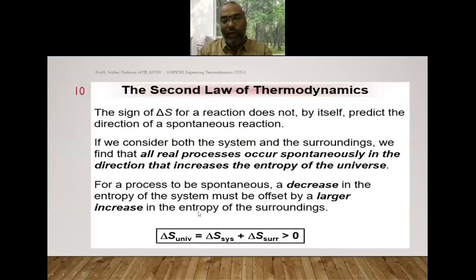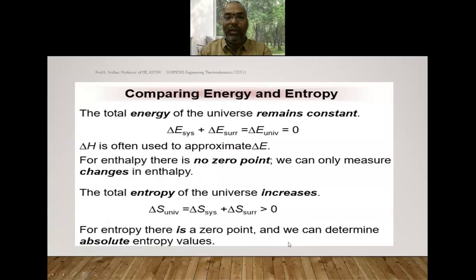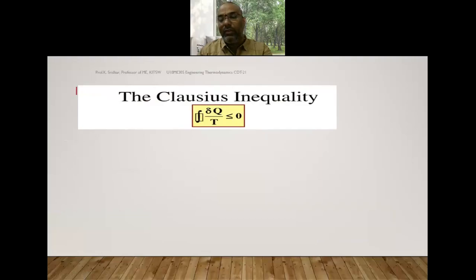To find the entropy change of the universe: the universe is the summation of system and surroundings, so ΔS_universe = ΔS_system + ΔS_surroundings. For an irreversible process this is always greater than zero. The total entropy value is always greater than zero — that is the entropy principle.